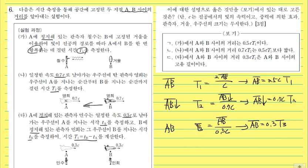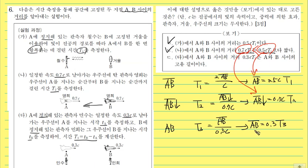자, 이제 정리하면, 가에서 AB 사이 거리는 0.5C × T1이니까 맞는 내용이고요. 나에서 AB 사이 거리는 0.7C × T2인데, 이건 비정상(줄어든) AB를 측정한 거고, 0.5C × T1은 정상 거리를 측정한 거예요. 그래서 0.7C × T2가 더 짧아야 되겠죠. 니은도 맞는 내용입니다. 다에서 AB 사이 거리 0.3C × T3는 정상 거리, 즉 고유 길이를 측정한 것이므로 맞습니다. 그래서 정답은 ㄱ, ㄴ, ㄷ입니다.